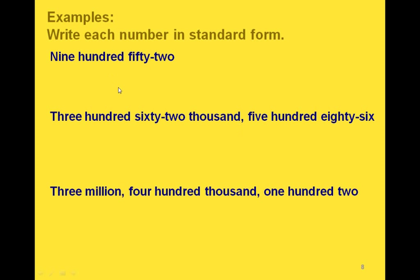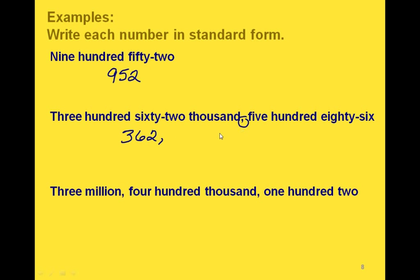Now we're going to go backwards and write each one of these numbers in standard form. So if we have 952, it's just going to look like that. Now this one — notice we have two different periods represented. So we would just start out by writing 362, and then put a comma. Then our number in the next period is 586, and that's the whole number.